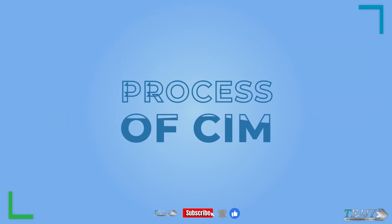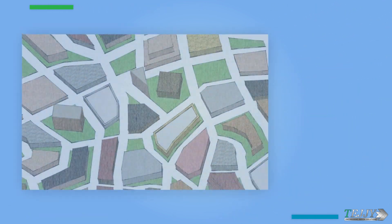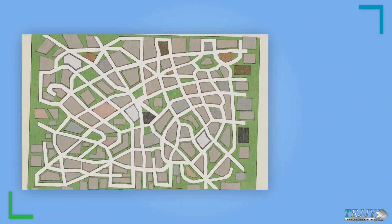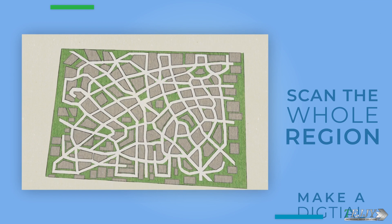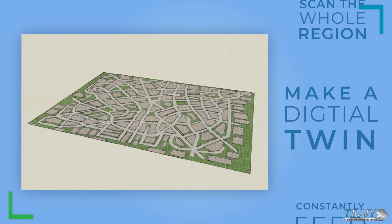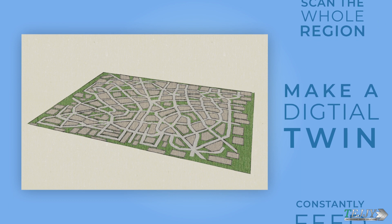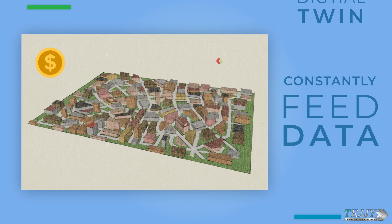The process of city information modeling involves three steps: First, scan the whole region. Second, make a digital twin of the scanned data. Third, start feeding real-time data into the digital twin.